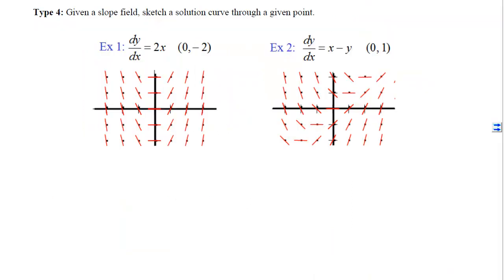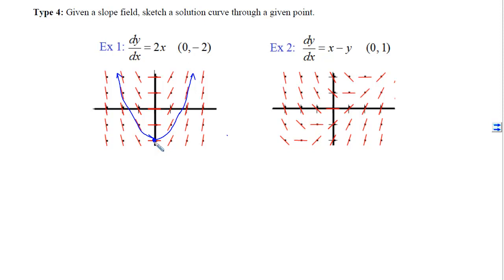The last type of problem is sketching a solution curve through a given point. In Example 1, dy/dx equals 2x, and we want the solution through (0, -2). Plot the point, then swim through the current. The slope is 0 at x equals 0, becomes positive and increasingly steep to the right, and similarly steeper to the left. This gives a parabolic shape — which makes sense, because the antiderivative of 2x is x squared plus a constant, and the constant is negative 2 when x equals 0.